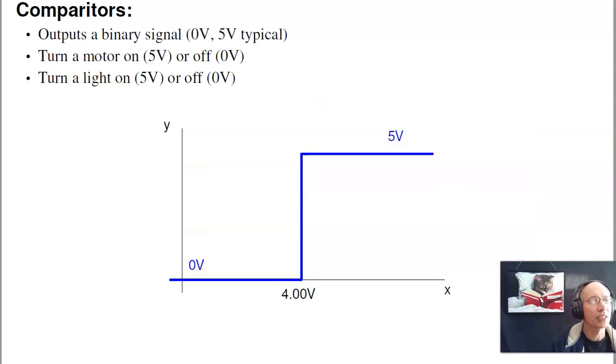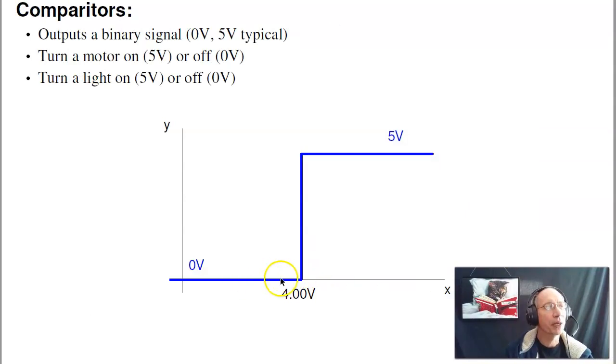A second circuit is a comparator. A comparator outputs a binary signal. It's either five volts or zero volts, on or off. Where you'd use a comparator is if you want to do something like drive a motor, drive a light. So the motor is either full on or full off. Where the light is full on, full off. That'd be like a night light or a fan.